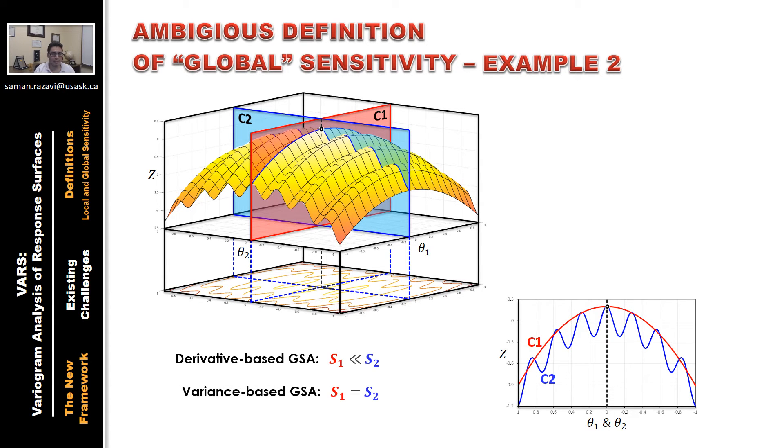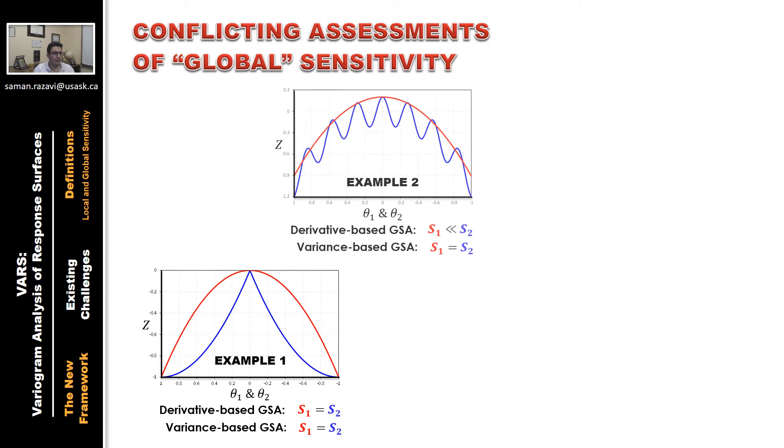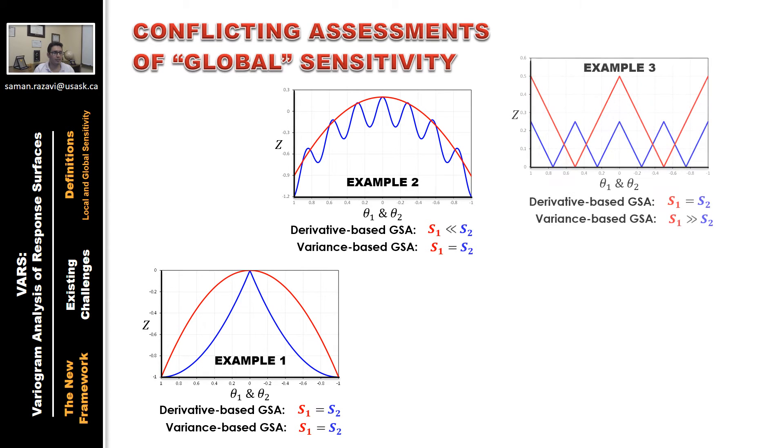However, according to the variance-based approach, they are equally sensitive, because the variance of the two functions are identical. So with these examples, first and second, and a third one that I didn't talk about in this presentation, we can show how the assessments of the two approaches can be conflicting.